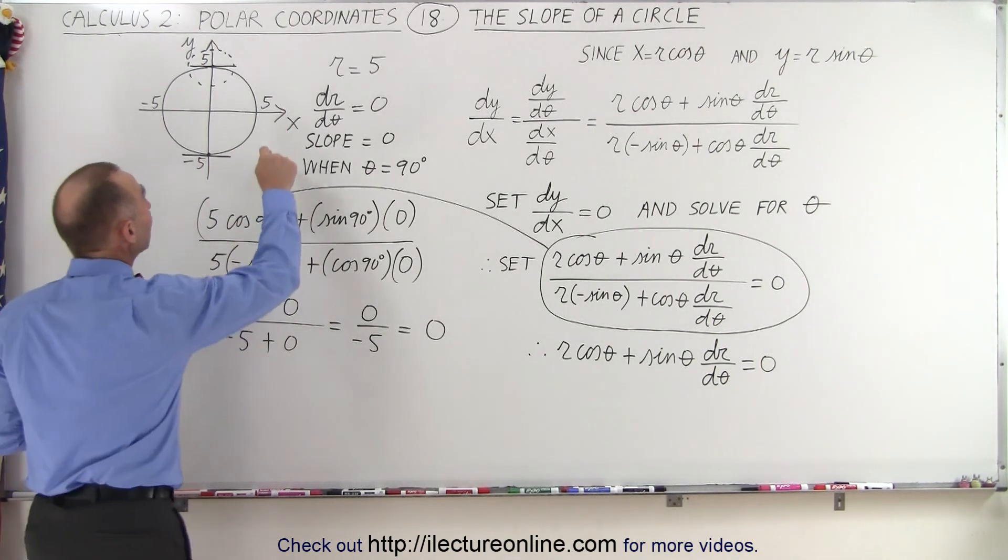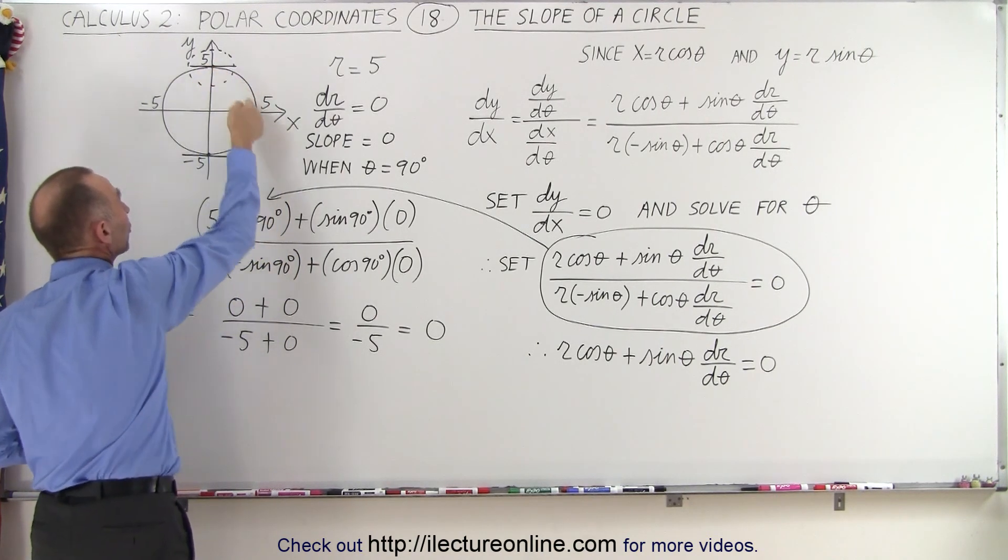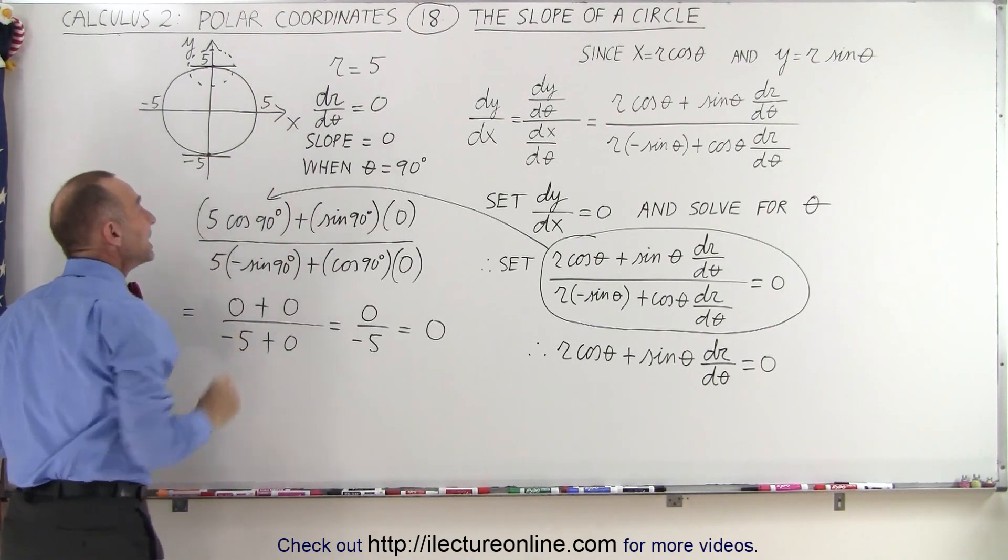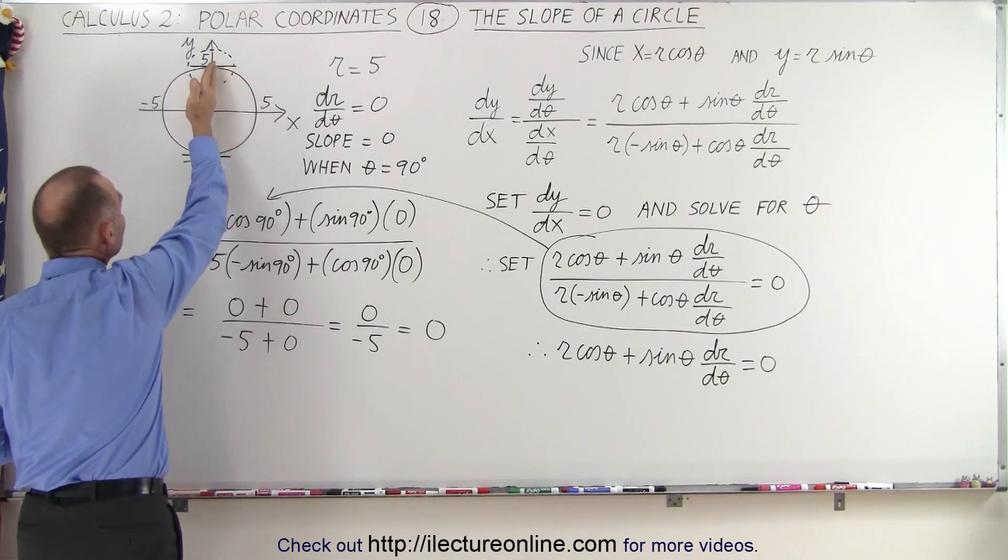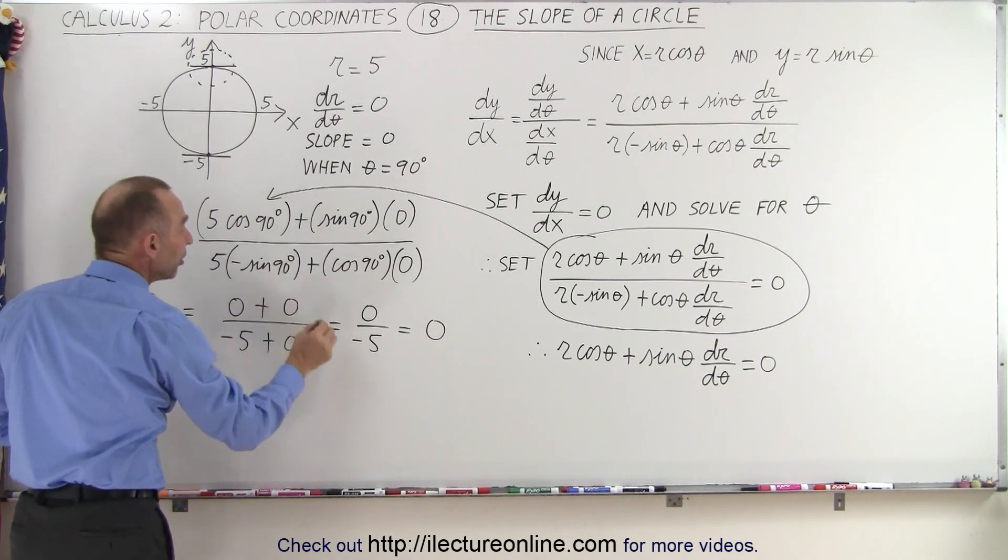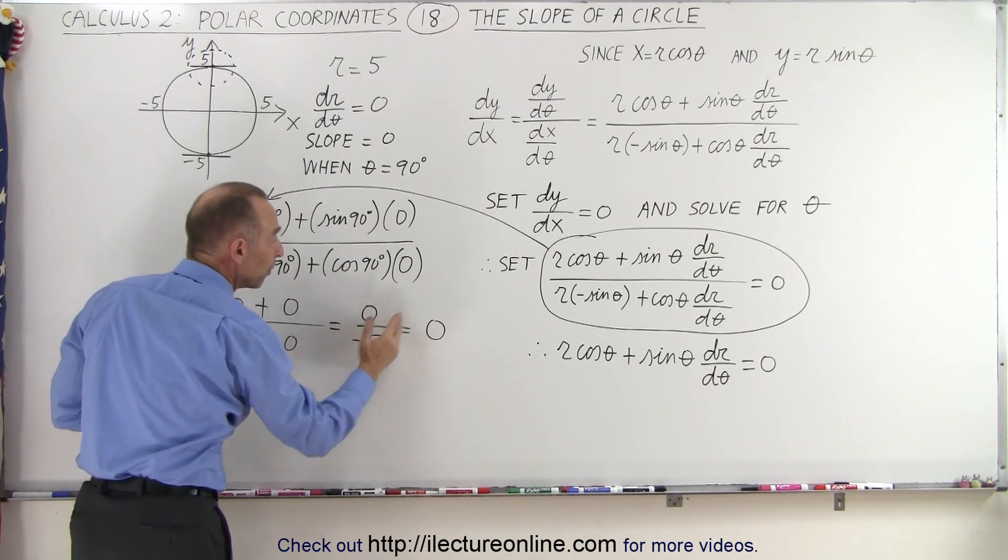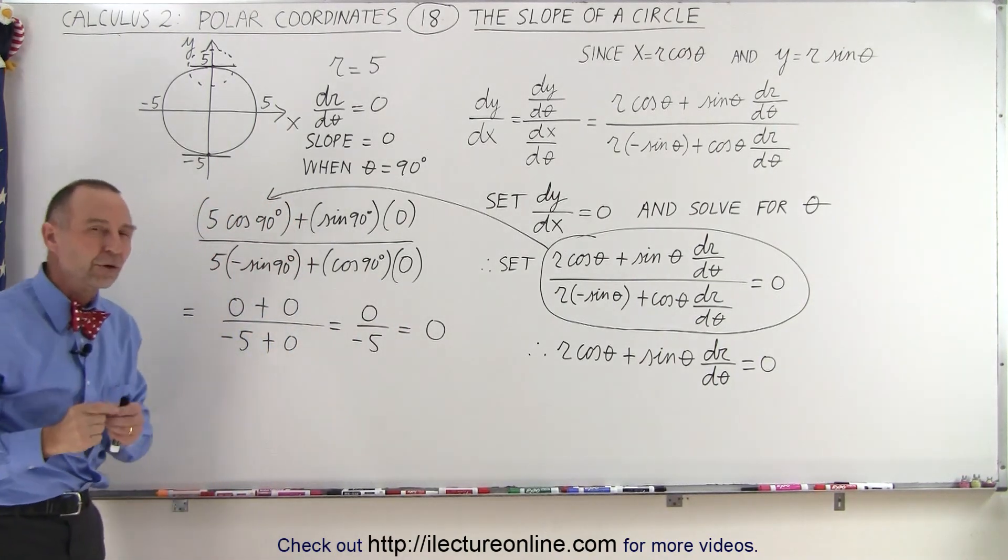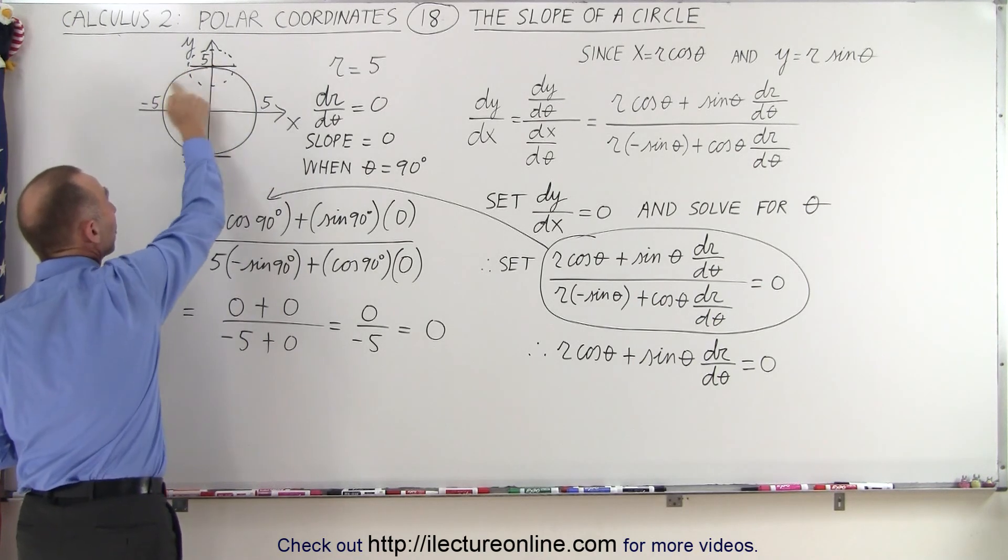Because as you can see, if you go anywhere from 0 to 90 degrees, this entire portion of the circle, the slope is indeed negative. So as we approach the angle theta equals 90 degrees, the slope will always be negative until it becomes equal to 90 degrees. At that moment, from a negative slope, it gets to be a 0 slope. If we now get past 90 degrees, now the slope will be positive.